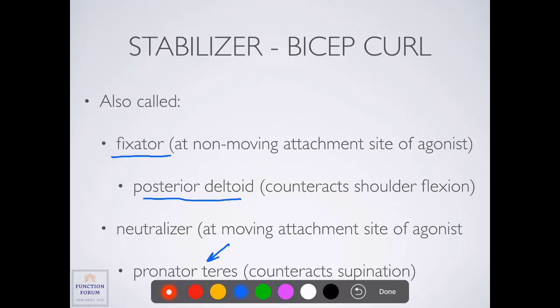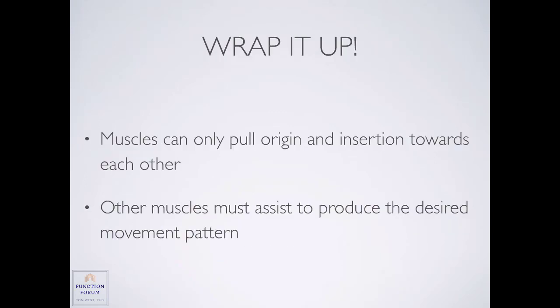When doing a bicep curl, not only do we have muscles active at the elbow, but also potentially in the forearm and at the shoulder. These muscles are not activated at a very high level, but they are eliminating unwanted motion so we can target movement to the joint we want to move. This presentation covers the different roles muscles can play during movement: agonist, antagonist, synergist, and stabilizer. Remember, muscles are not smart — the elbow flexion example demonstrates that the biceps cannot choose to only move the elbow. Other muscles must become active to limit motion to just the elbow, guiding the bones to move in the way we choose.